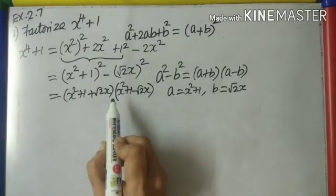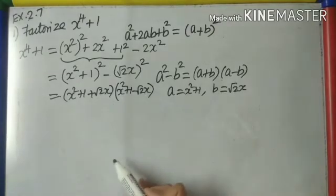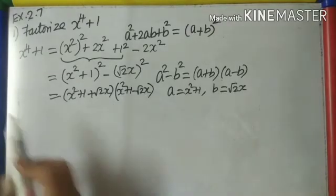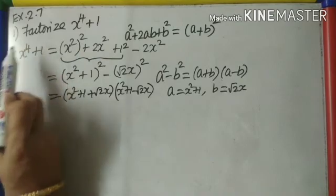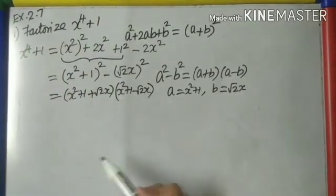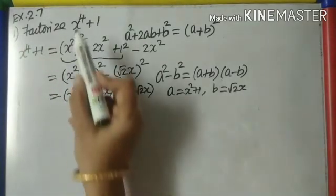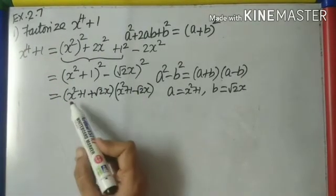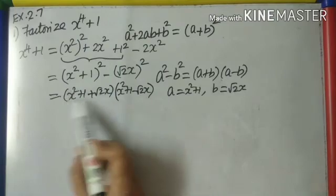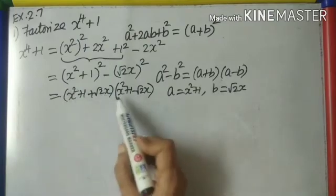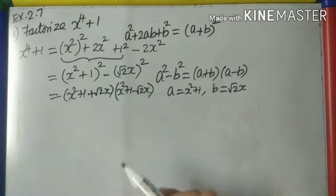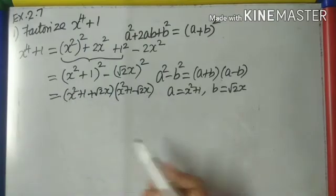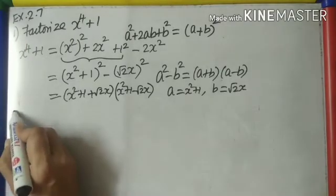And that is the answer. The question was to factorize an expression of power 4, and we have written it as a product of two quadratics: (x²+1+√2x)(x²+1-√2x).